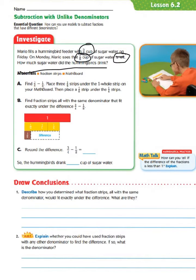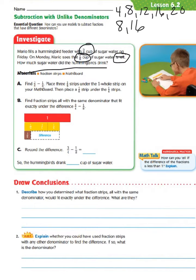If we list out our multiples of 4, we see 4, 8, 12, 16, and 20. And then our other denominator is 8, so it's going to be 8, 16 — and we can already stop because we already have a common denominator of 8.